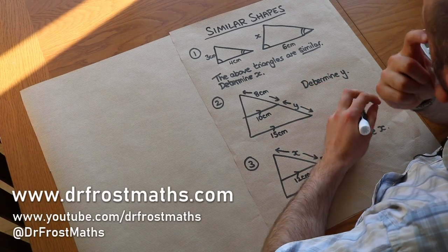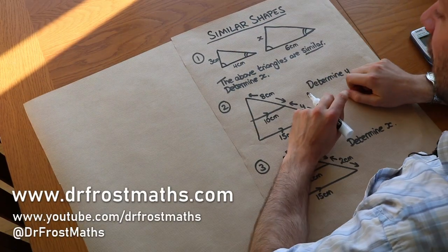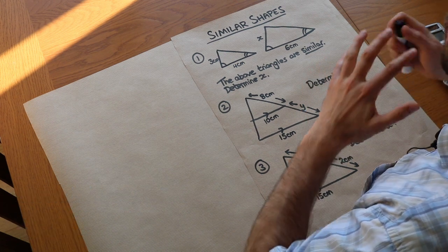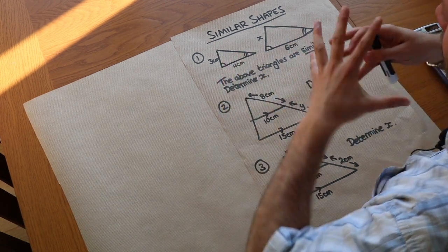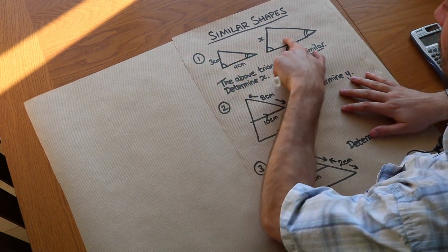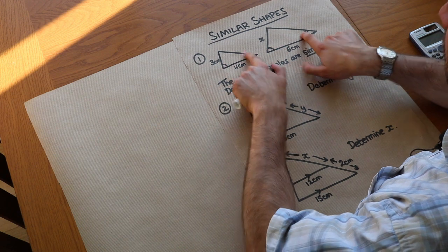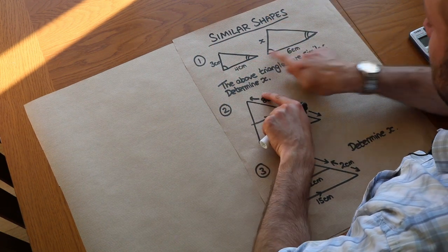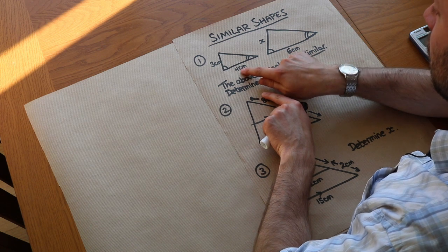Hello and welcome to this Dr. Frost Maths video on similar shapes. Similar shapes are shapes that are the same shape but could possibly be different sizes. We can see with these two triangles, the angles are all the same, so it's the same overall shape, but this one is bigger than this because the six is larger than the four.